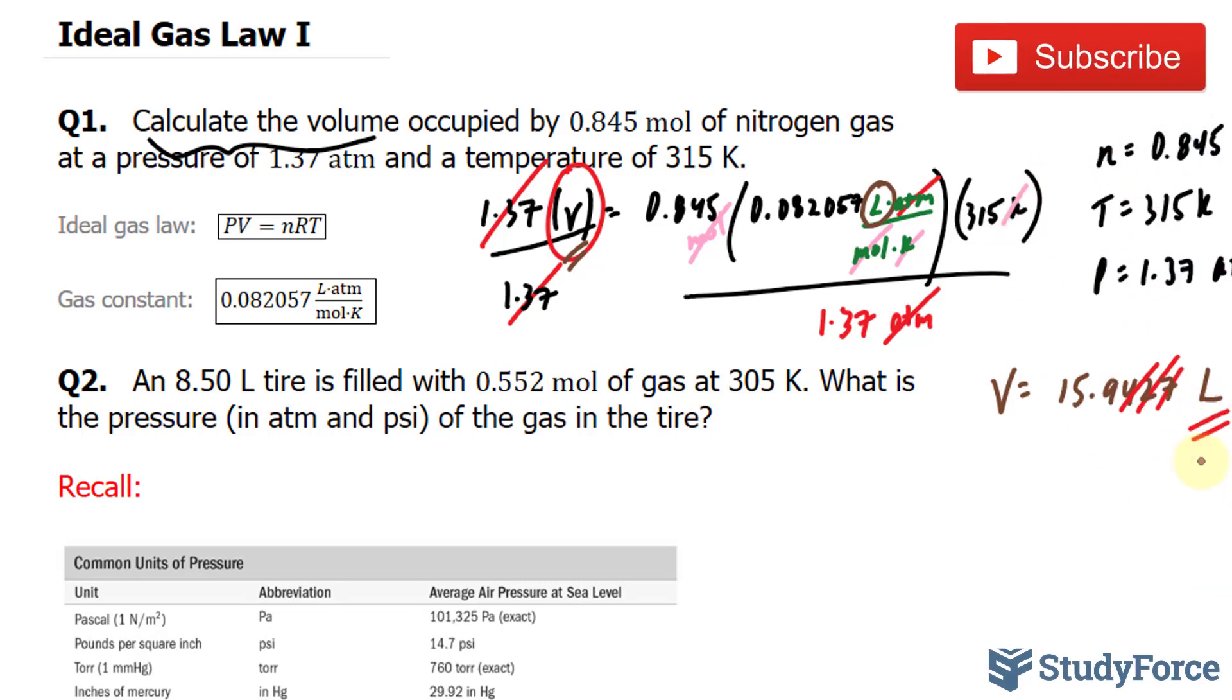Let's move on to question number 2. The question reads, an 8.50 liter tire is filled with 0.552 moles of gas at 305 Kelvin. What is the pressure in ATM and PSI of the gas in the tire?